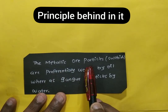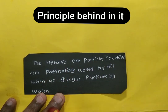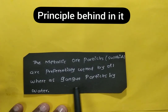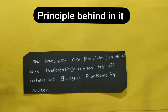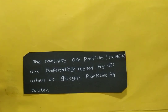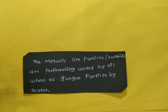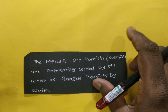The metallic ore particles — that is, sulfide ore particles — are preferentially wetted by oil, whereas gangue particles are wetted by water. Gangue particles are the non-metallic impurities: siliceous materials as well as rocky materials. The removal of these gangue particles from the ores is called the concentration process.